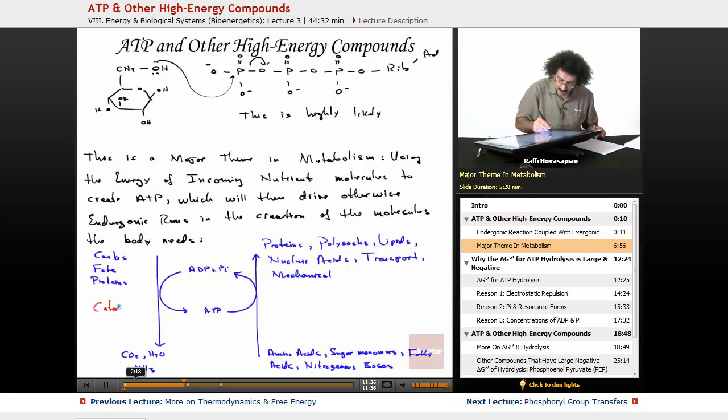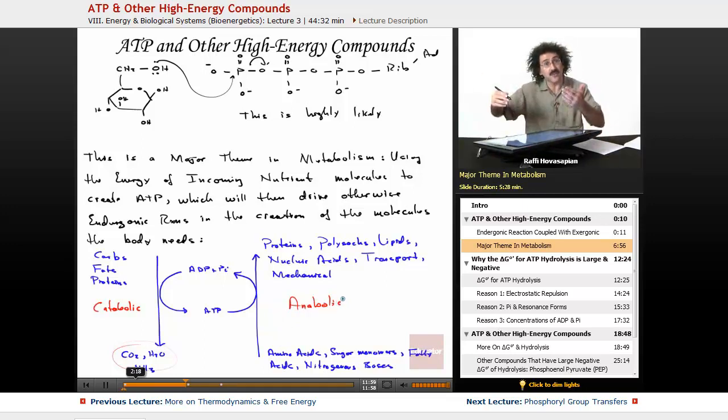So we take in our nutrients. The catabolic pathways of the body break things down. They spit out the energy depleted products. The energy that they take from these carbs, fats, and proteins, they use it to take adenosine diphosphate plus inorganic phosphate to create ATP. Now ATP can be used to drive the anabolic pathways. Anabolic means the creation to actually make the proteins, the polysaccharides, the lipids, the nucleic acids that the body needs in addition to all of the other energy needs. That's it. That's all that's going on.